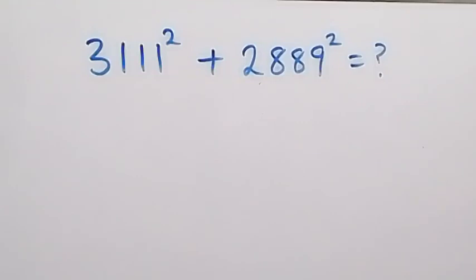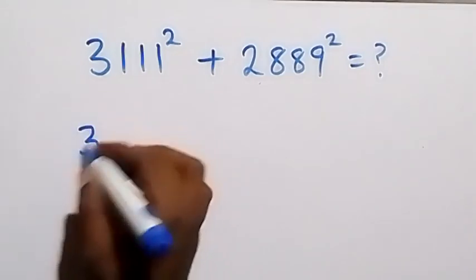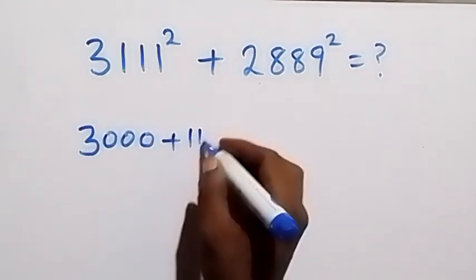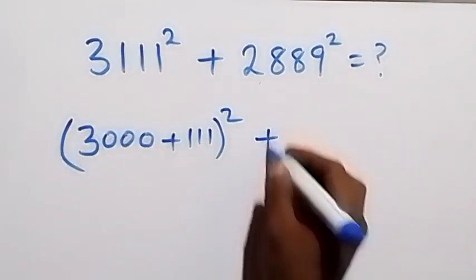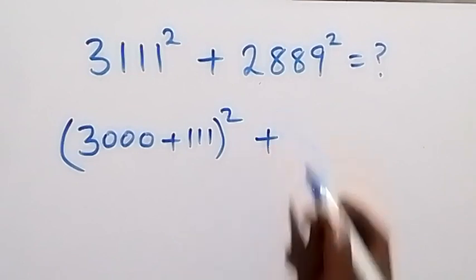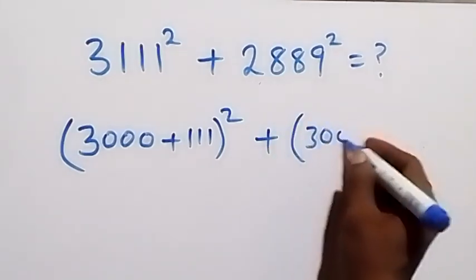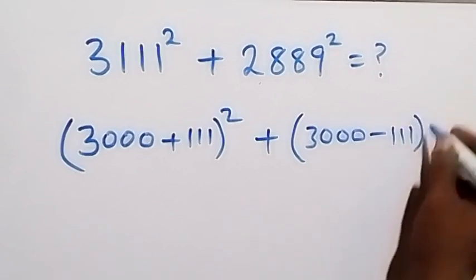Hello, you are welcome. How to solve this nice math problem without a calculator. From here we can write 3111 as 3000 plus 111, all squared, then plus. We can also write 2889 as 3000 minus 111, all squared.